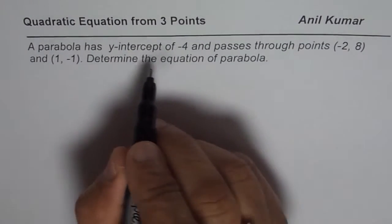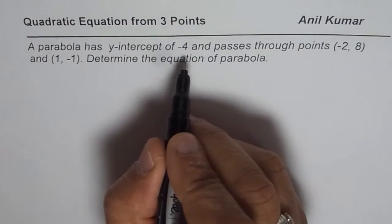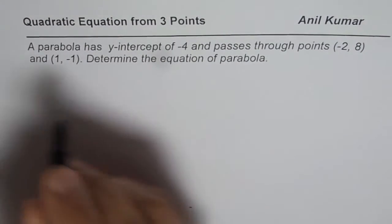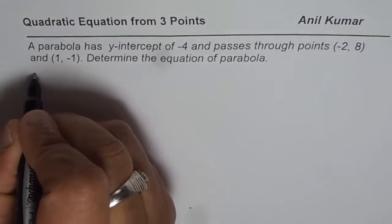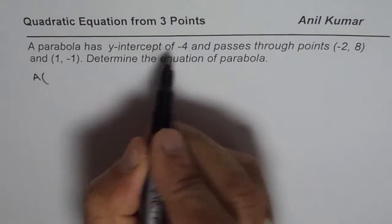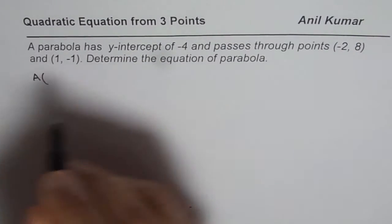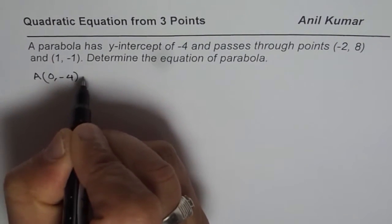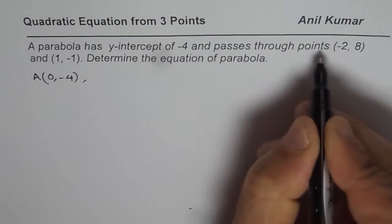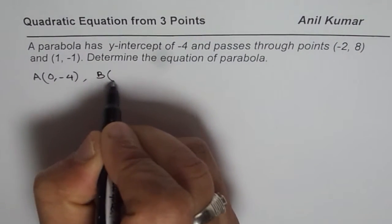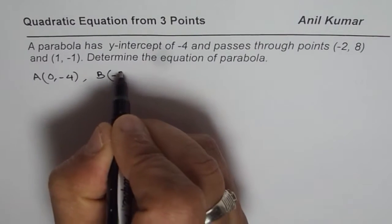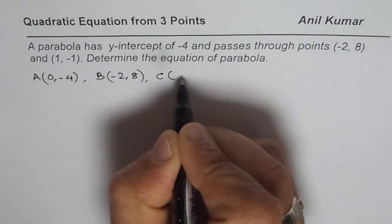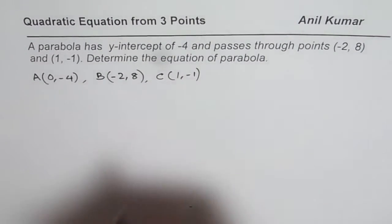We are given three points on the parabola. Let me call the y-intercept as point A — since it's the y-intercept, x is 0 and y is minus 4. The second point, let me call that B, is minus 2, 8, and the third point C is 1, minus 1.